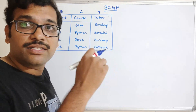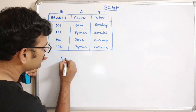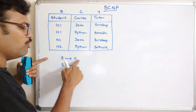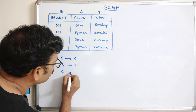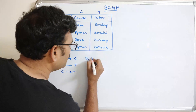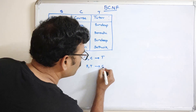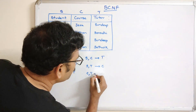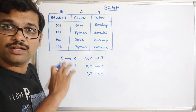Let us write down all possible functional dependencies: S→C, S→T (student determines course or tutor), C→T (course determines tutor), and the composite dependencies: S,C→T; S,T→C; and C,T→S. These are the possibilities — we will now check which are valid functional dependencies.